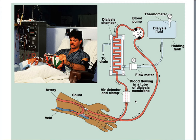This is a dialysis machine. What it does is filter the blood — it does the job of what the kidney would do. When the kidney fails, we need dialysis, and this can be anywhere from three to six hours, three times a week.